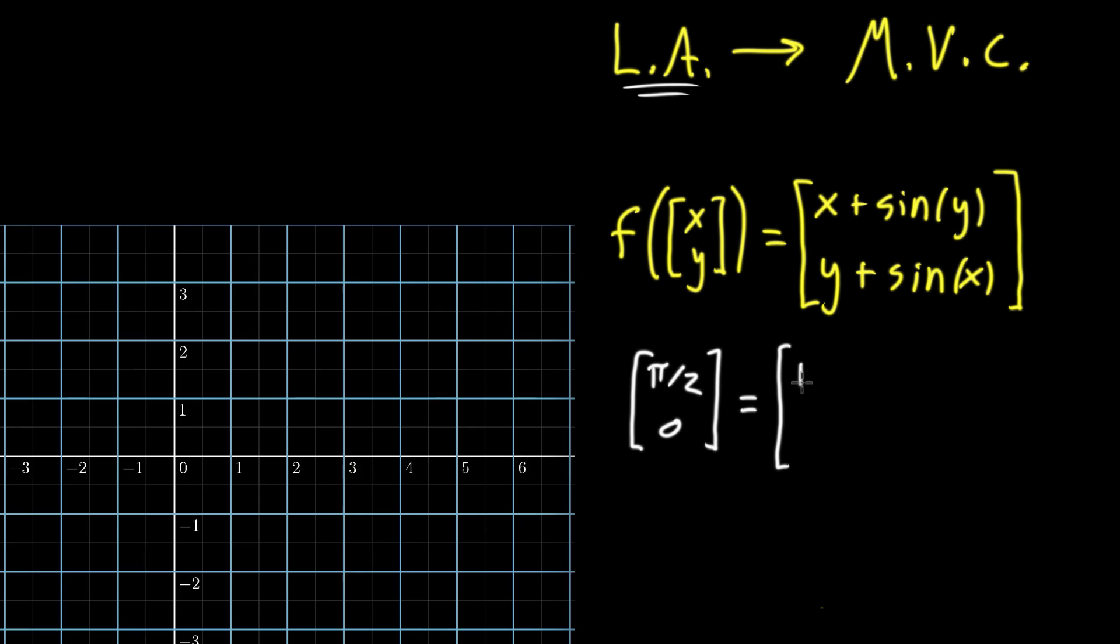So at the top here, x stays the same. It's pi halves. And then sine of y would be sine of zero. So that x component is going to completely stay the same.